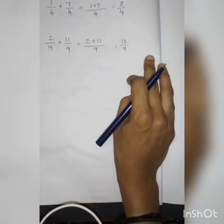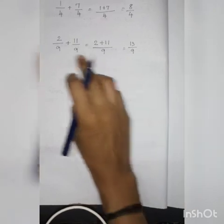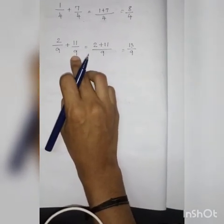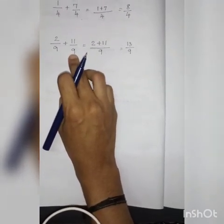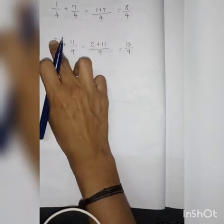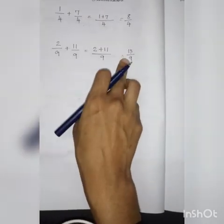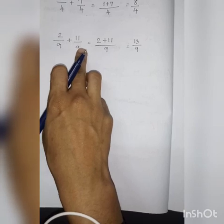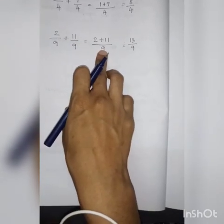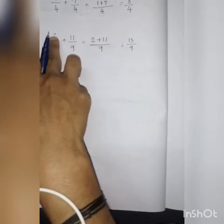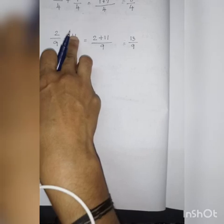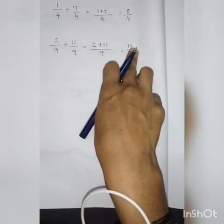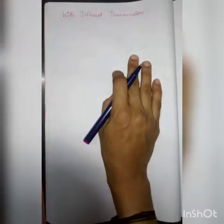Addition will be done only when denominators are same. If the denominators are same, we can directly add the numerators and write as such. Because here, denominators are same, so I am writing the denominator as such and directly adding the numerators and writing the answer. Understood?